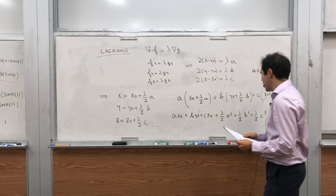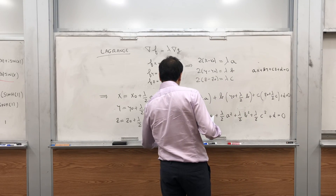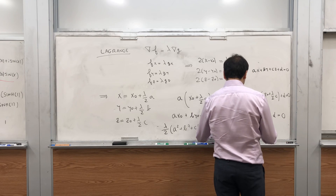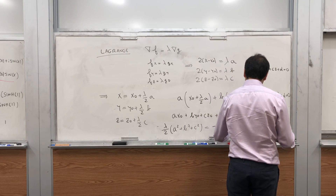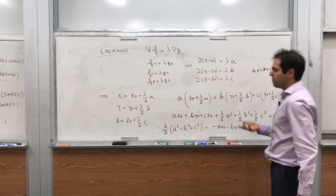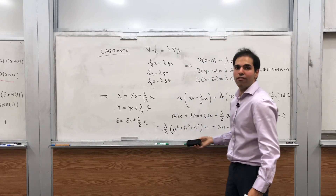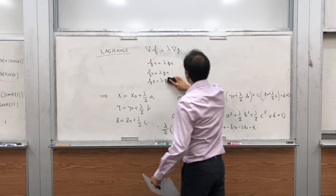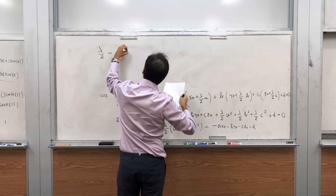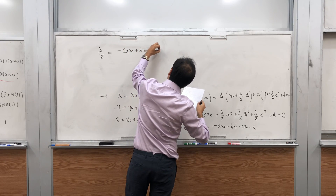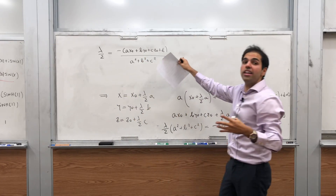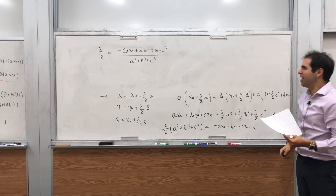After foiling everything out and grouping like terms, λ/2 factors out nicely: λ/2·(a² + b² + c²) = -(ax0 + by0 + cz0 + d). Since all the expressions involve λ/2, we solve for λ/2 directly: λ/2 = -(ax0 + by0 + cz0 + d) / (a² + b² + c²). This is already starting to look like the formula for the distance between a point and a plane.